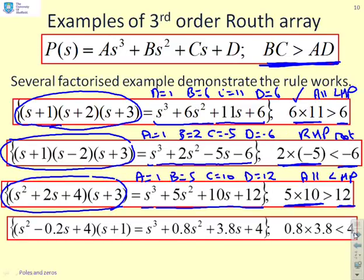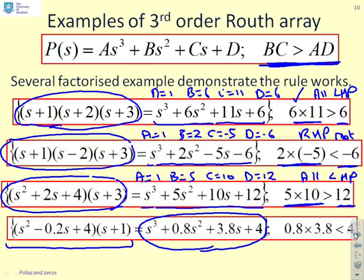A final example. I've set it up so it has some right half-plane roots. The interesting thing here is if you look at the polynomial when multiplied out, all the coefficients are positive. s cubed plus 0.8s squared plus 3.8s plus 4. You might expect all the roots to be in the left half-plane. But when you use the Routh array, you find B times C, 0.8 times 3.8, is less than AD which is 4. Therefore, this includes right half-plane roots. That's a key thing. With cubics, you can't just look at the sign of the coefficients. You have to use something like the Routh array to be sure to get it correct.